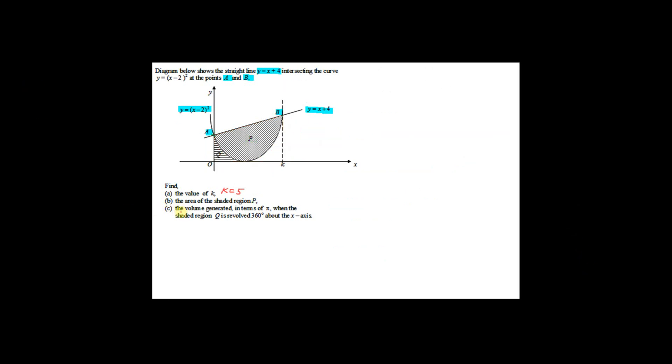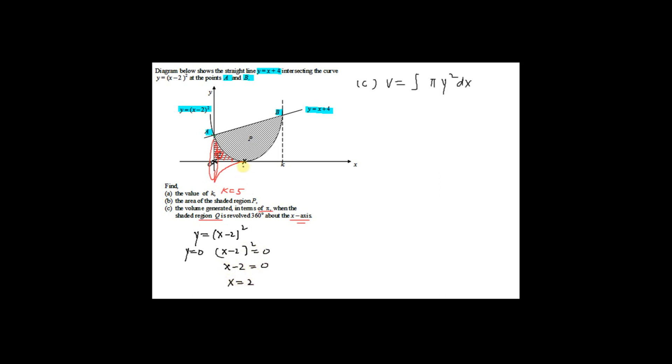Now we move on to Part C — find the volume generated in terms of pi when shaded region Q is revolved 360 degrees about the x-axis. When a region is revolved about the x-axis, the volume equals pi times the integral of y squared dx. The region runs from x equal to 0 to where the curve meets the x-axis. Setting y equal to x minus 2 squared equal to 0 gives x minus 2 equal to 0, so x equal to 2.